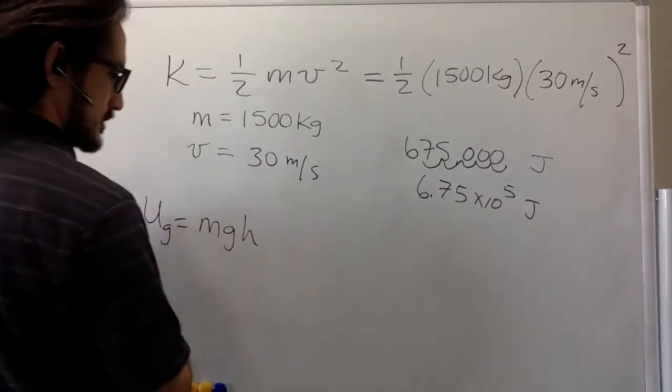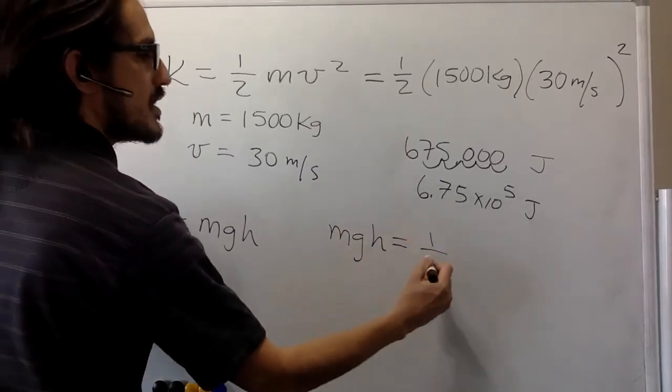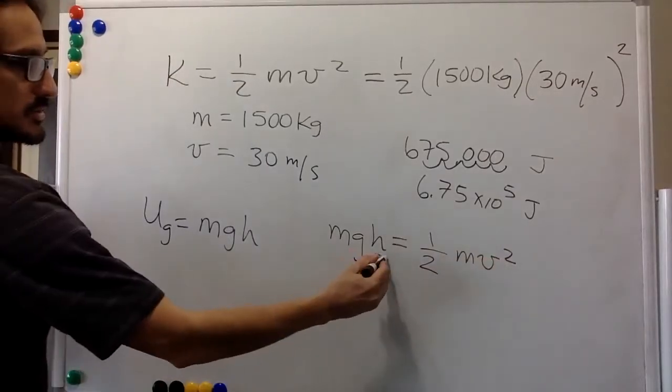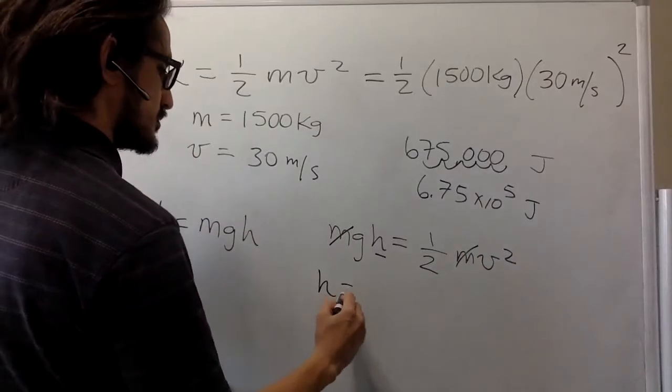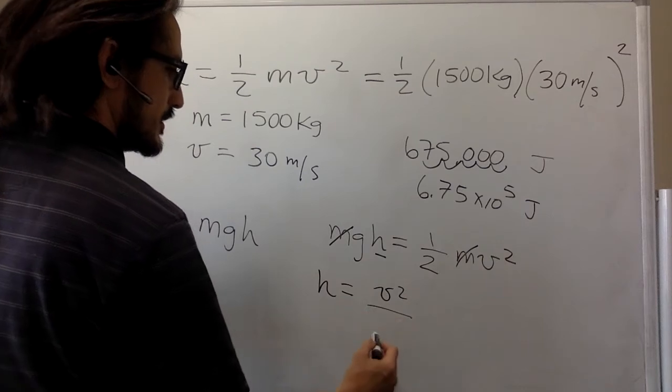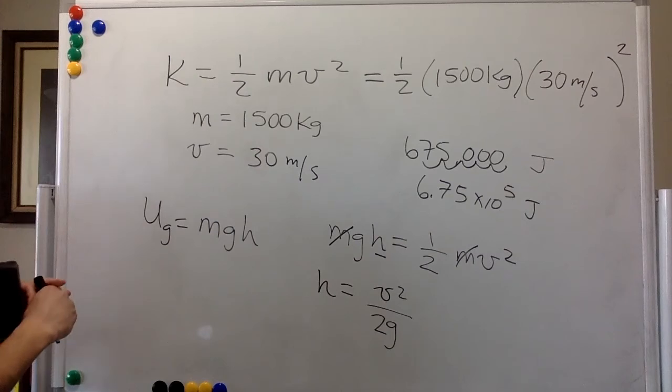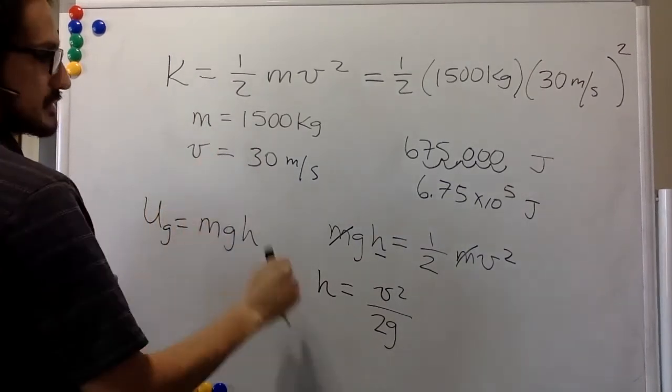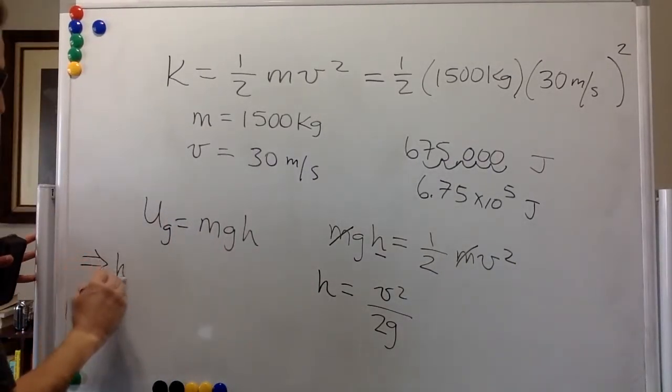So mgh equals 1/2 of mv squared. We want h. The masses cancel out because we have them on both sides. So h is velocity squared divided by 2 times the acceleration due to gravity. And we know the velocity squared. Well, we know the acceleration due to gravity. This is on Earth. And so we can just plug in the numbers in there.